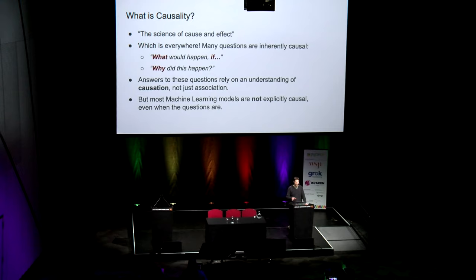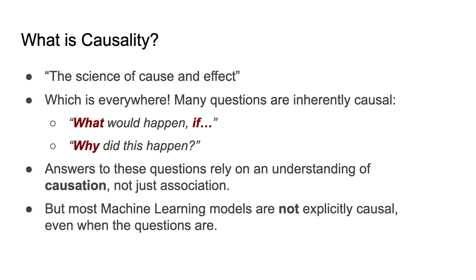As soon as you start looking into causal inference, you'll encounter this term causality. At first it seems like a bit of a nebulous concept, and it doesn't have a very specific definition. It encompasses a range of topics around the science of cause and effect. This topic is everywhere — there are many questions you'll encounter in a data science role which are inherently causal. If you look out for phrases like 'what would happen if' or 'why did this happen,' I call these questions inherently causal because to answer them properly, you really need an understanding of causation, not just association or correlation.